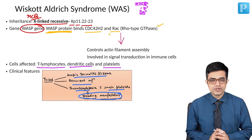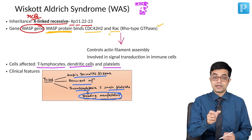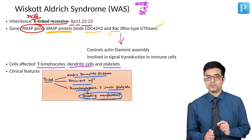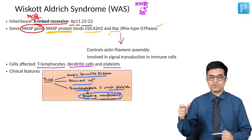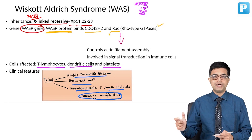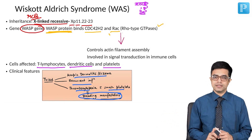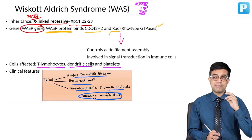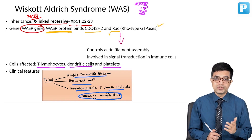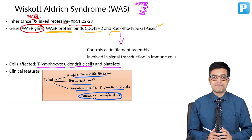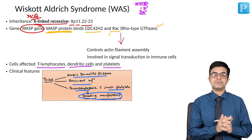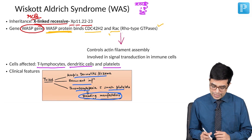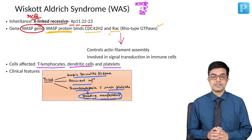In platelet disorders, superficial mucosal bleeds and petechiae/purpura/ecchymosis are more common, whereas coagulation-related disorders cause deeper bleeds like hemarthrosis. In Wiscott-Aldrich syndrome, questions will mention bruising, epistaxis, recurrent bruising, petechiae, purpura, non-blanching superficial rash — all indicating superficial platelet-related bleeding. Combined with eczema and recurrent infections, you would think of Wiscott-Aldrich syndrome.